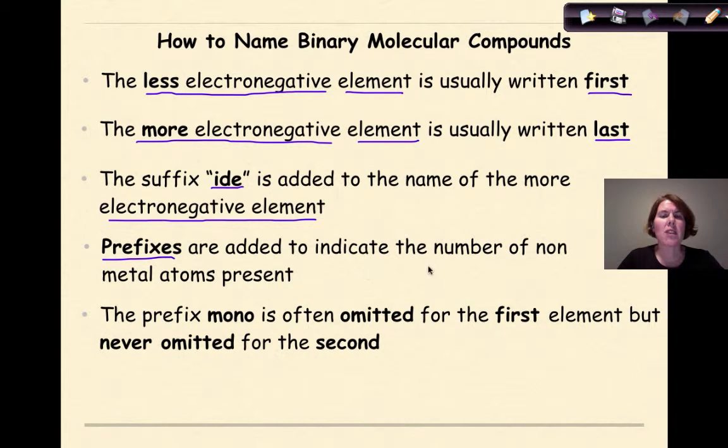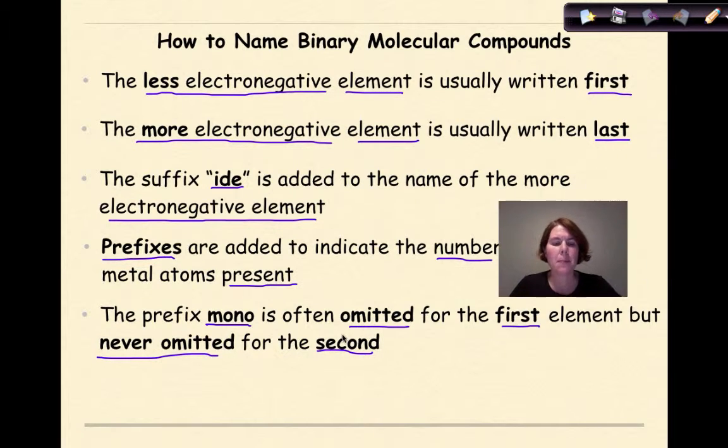Prefixes are added to indicate the number of nonmetal atoms present. Now this is something that's a little different, so I'll show you some examples of this. And the prefix MONO is often omitted for the first element, but never omitted for the second. And I'll show you specific examples of that.